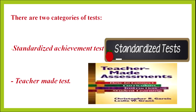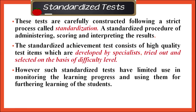There are two categories of test. First is standardized achievement test and the second one is teacher-made test. Standardized tests are carefully constructed following a strict process called standardization — a standardization process of administering, scoring and interpreting the results. The standardized achievement test consists of high quality test items which are developed by specialists, tried out and selected on the basis of difficulty level. However, such standardized tests have limited use in monitoring the learning progress and using them for furthering learning of the students.